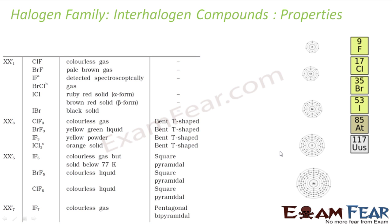The properties of interhalogen compounds: they are prepared by direct combination of two halogens. They are all covalent. They are covalent because both X and X' are halogens and neither is willing to give electrons. Since none of them will give electrons to form a bond, sharing of electrons is the only possibility, and sharing of electrons gives a covalent bond.